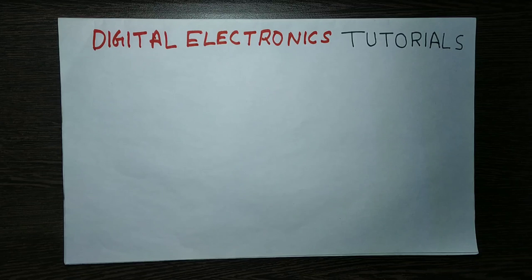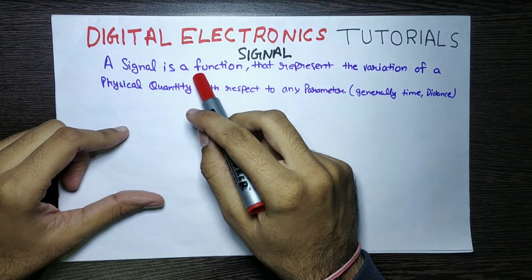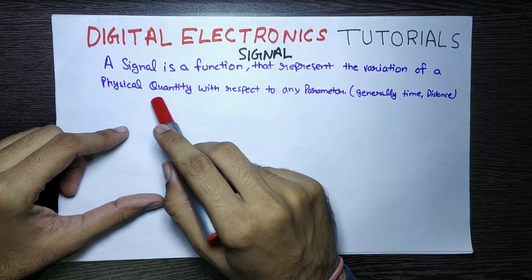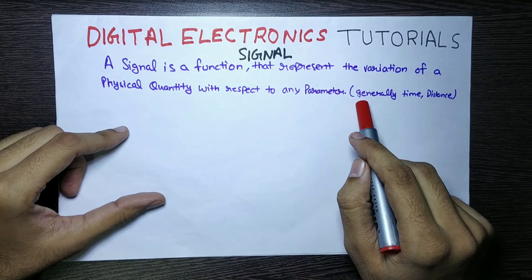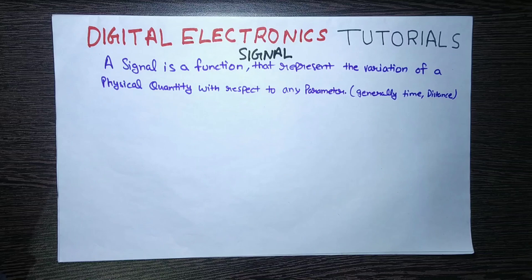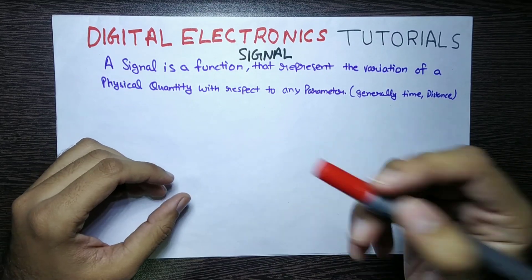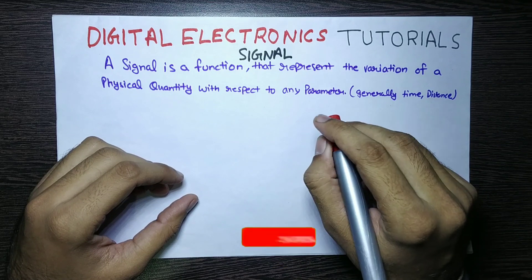Our first topic is a signal. After that, we will go on to Analog signal and Digital signal. What is a signal? A signal is a function that represents the variation of a physical quantity with respect to any parameter, generally time or distance.